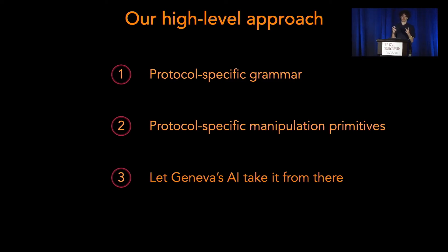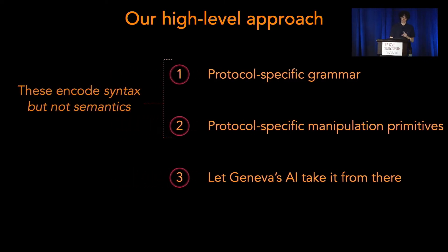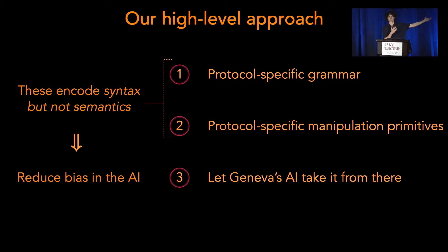To find these strategies, we hand these primitives off to Geneva's AI — originally written by Kevin Bach and our group at the University of Maryland — which searches over the space of primitives and finds successful strategies, training against real-world censors. Notably, these primitives understand syntax and not semantics. It can see the host header and replace it with 64 A's but doesn't know what that means. This keeps the AI blind so it can blindly explore that space.